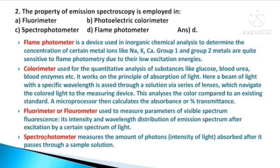The property of emission spectroscopy is employed in — options: fluorimeter, photoelectric colorimeter, spectrophotometer, and flame photometer. The answer is option D, flame photometer. The flame photometer is a device used in inorganic chemical analysis to determine the concentration of certain metal ions like sodium, potassium, and calcium. Group 1 and group 2 metals are quite sensitive to flame photometry due to their low excitation energies.